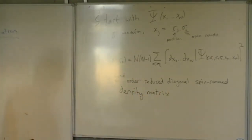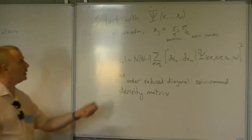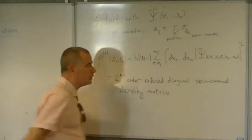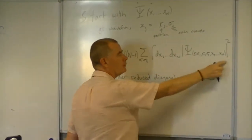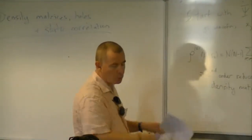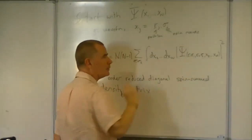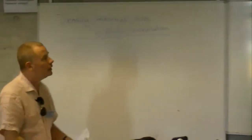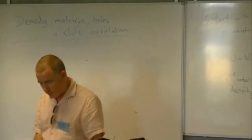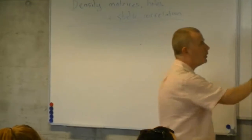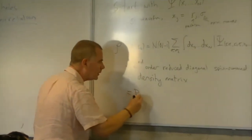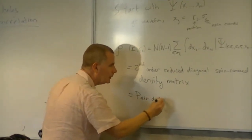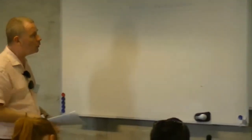So I square the many-body wave function and I integrate over all but the first two coordinates. I'm also going to spin sum over the first coordinate and multiply by n times n minus 1, and this object is called the second order reduced diagonal spin summed density matrix. Second order meaning we left two coordinates out, reduced meaning we integrated over the rest, diagonal in the sense that we took the square of the wave function. For simplicity, we'll just call this the pair density.